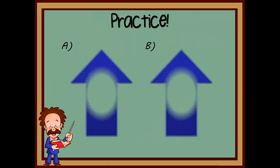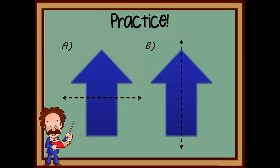So let's practice. Here are two identical arrows. Arrow A has a line of symmetry drawn horizontally, and arrow B's line of symmetry is drawn vertically. Which line of symmetry is drawn in the correct place?